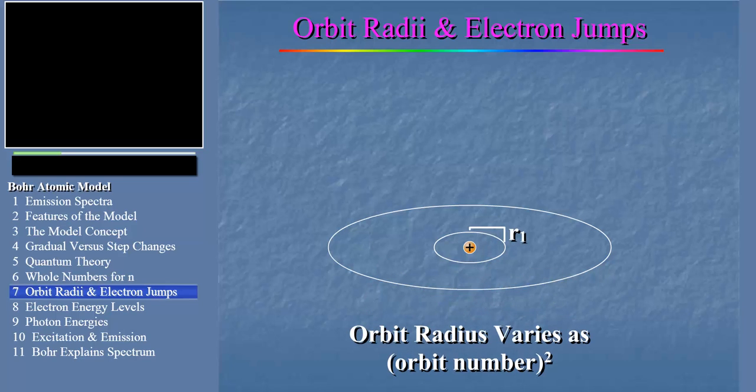What does this mean? Well, the radius of orbit 2 will not be twice as large as that of orbit 1, but 4 times as large, because 4 is the square of 2.